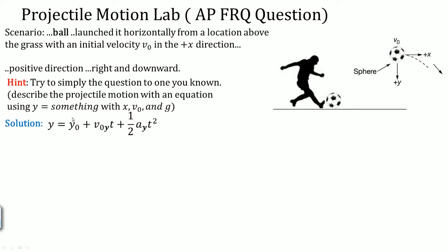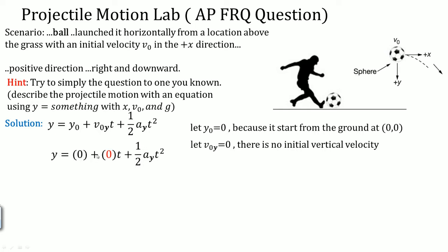Here we can see how some terms go to zero. y₀ goes to zero because it starts from the ground. The initial velocity in the y direction goes to zero because there is no initial vertical velocity since the scenario says launch it horizontally. So those two things go to zero.